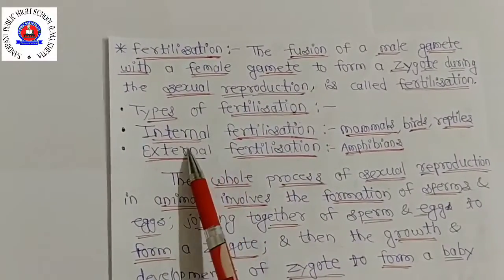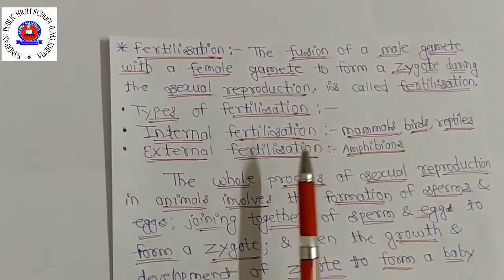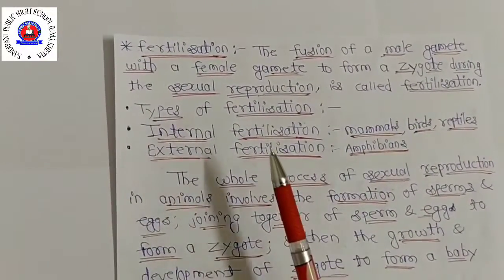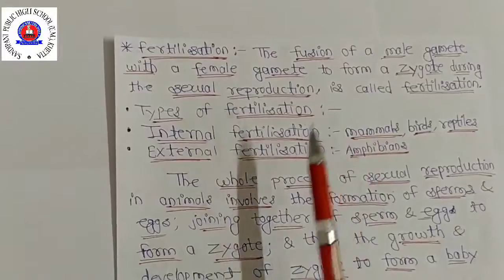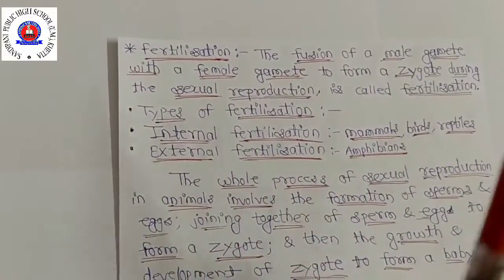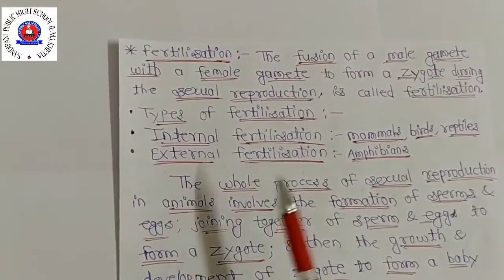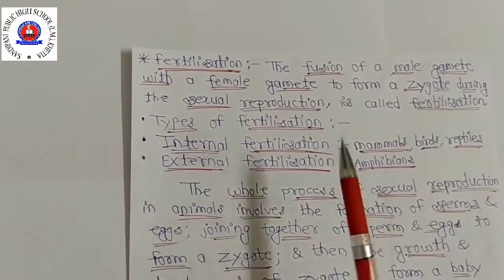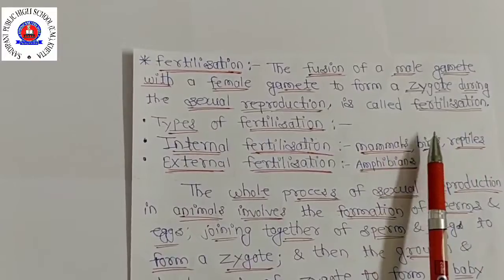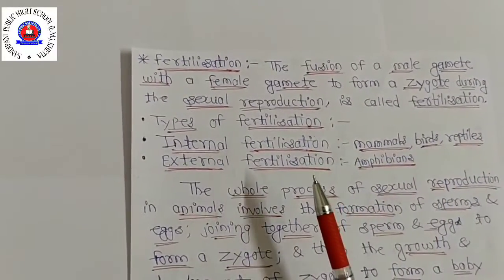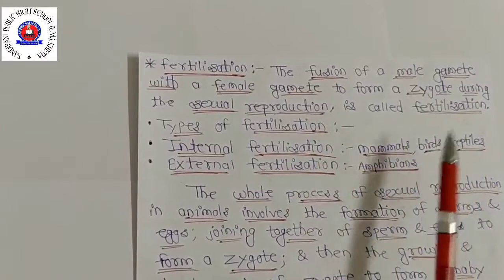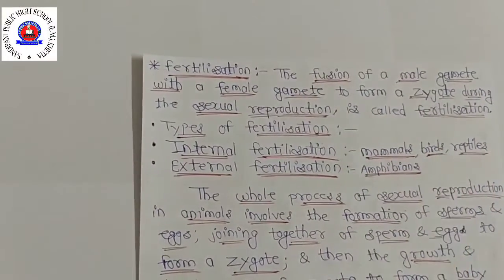Internal fertilization is when the fertilization occurs inside the female body. The female animal's eggs are fertilized by sperm inside her body. In mammals, including human beings, birds, and reptiles, fertilization occurs inside the female body. In other words, internal fertilization takes place in mammals, birds, and reptiles.